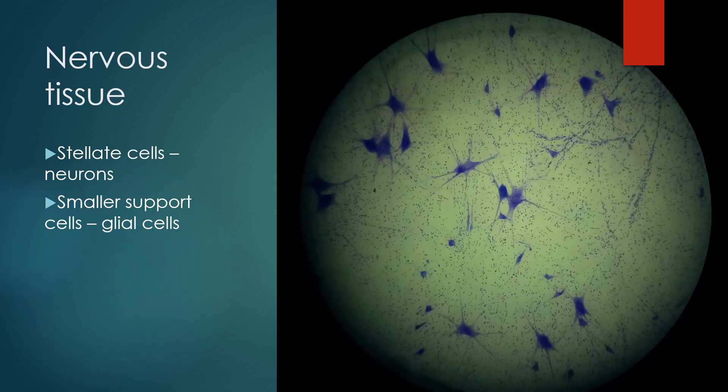The first microscope station had a nervous tissue slide. This is the actual slide that you all looked at. I took these photos with my phone camera after you had finished taking the test. Nervous tissue is an excitable tissue that our body uses to send signals for internal communication and sensing external stimuli. The cells that perform that communication function are known as neurons, and they are stellate, meaning they are roughly star-shaped.